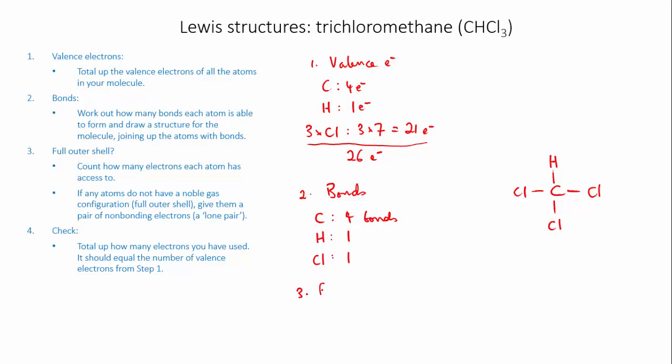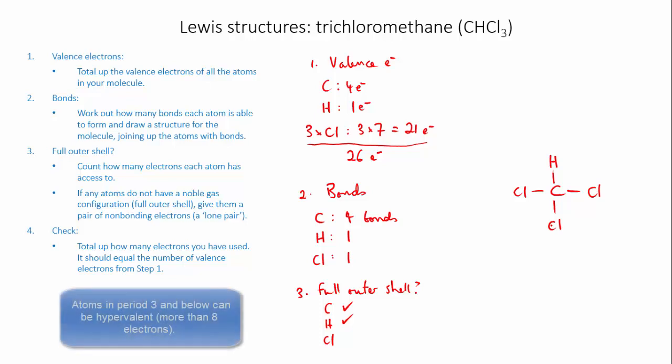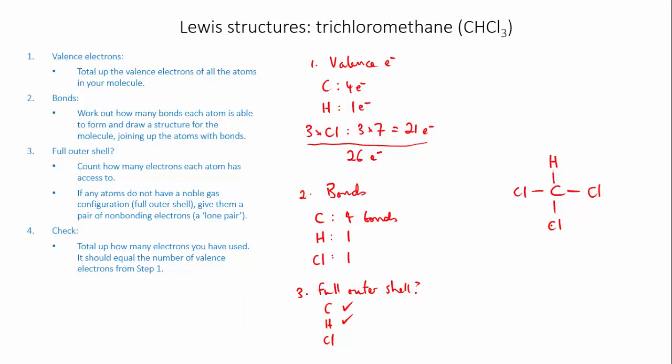Now I check for the full outer shell. Carbon forms four bonds, each bond gives it two electrons, so it has eight — it's fine. Hydrogen has formed one bond giving it two electrons — also fine. The chlorines however have only formed one bond, giving them two electrons, but they need eight. Chlorine can accept more than eight electrons, but the default is eight, so we shouldn't give hypervalent atoms more electrons unless absolutely necessary. Each chlorine needs eight electrons and can't receive more bonding electrons, so we use non-bonding electrons — I'll give each chlorine three lone pairs. Now each chlorine has six non-bonding and two bonding electrons, giving it a full outer shell of eight.